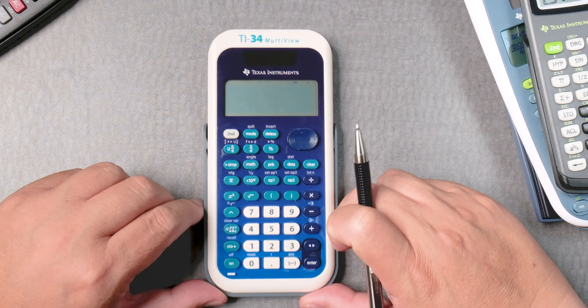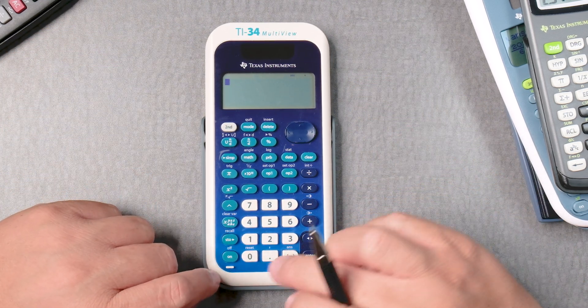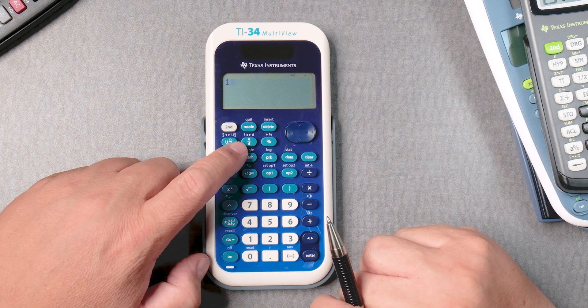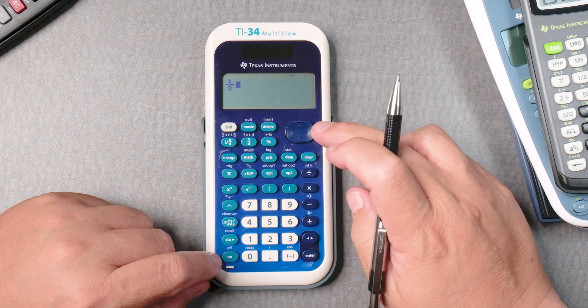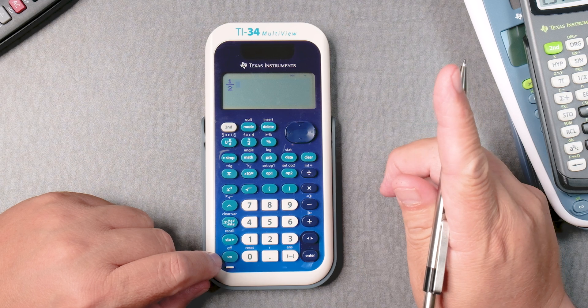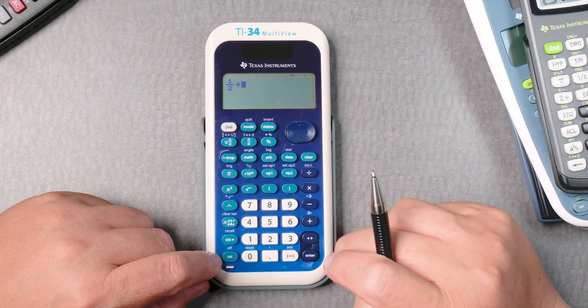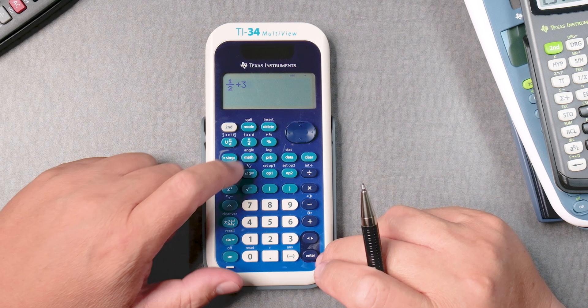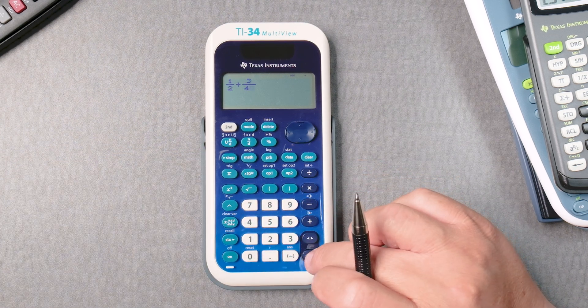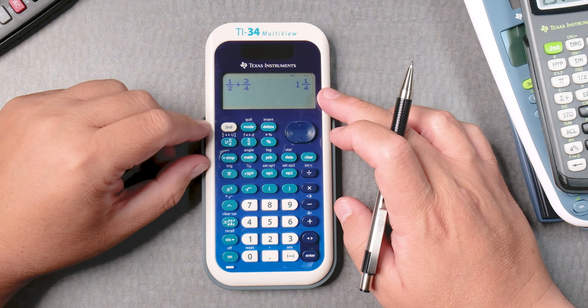Let's do 1 half, so 1, there's a fraction button, 2, let's say half, move the D pad over to the right, and then plus 3 over 4, 3, fraction button, 4, enter, and gives you 1 and 1 fourth.